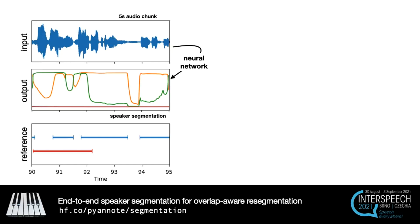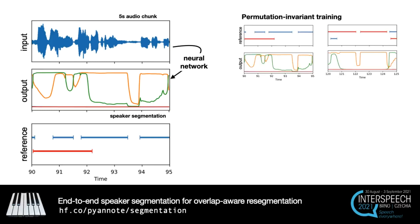Inspired by recent advances in end-to-end speaker diarization, we train a neural network to ingest short audio chunks and directly output speaker segmentation scores. Although we do use a large amount of labelled conversations from DIHARD, AMI and VoxConverse datasets, the neural network is trained in a way that is independent of the actual identity of the speakers. In order to generalize to unknown speakers, we use permutation invariant training so that the neural network is essentially blind to speaker permutations.